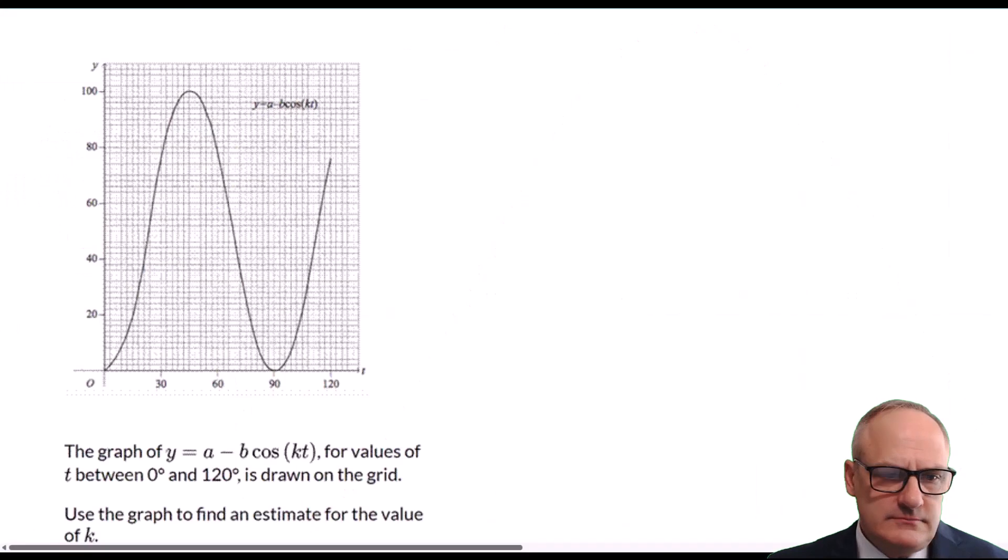So if we go back to our question, we can see that we're going between 100 and zero. So that means our axis is going to be at 50, and our amplitude, how big it is from our axis, is going to be 50. So a is going to be 50 and b is going to be 50.